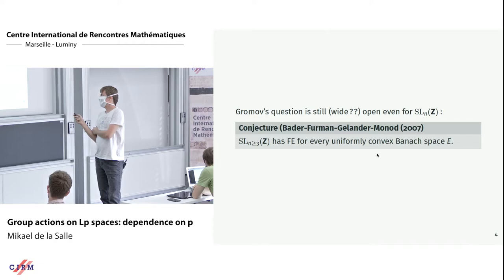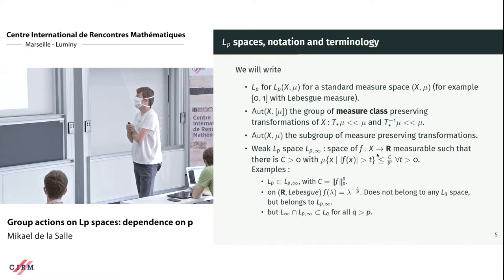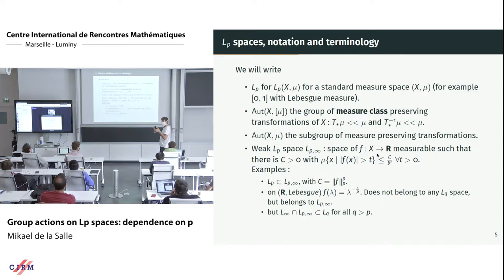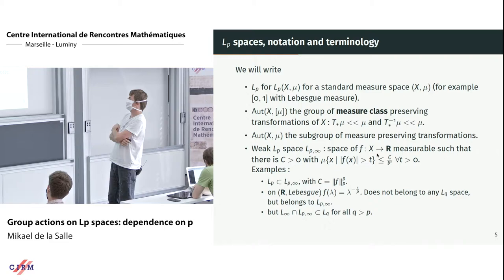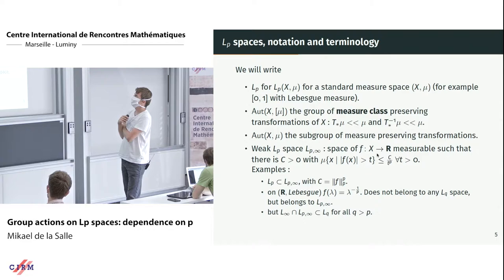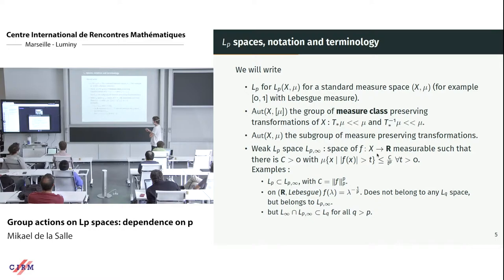There are many things understood for LP spaces that are not understood for general Banach spaces. To fix notation: I will denote LP for the LP space of a standard measure space — you can choose your standard measure space, they all have the same properties. I will consider two groups associated to the measure space (X, μ): the automorphism group Aut(X, [μ]) of measure-class-preserving transformations, and the subgroup Aut(X, μ) of measure-preserving transformations.